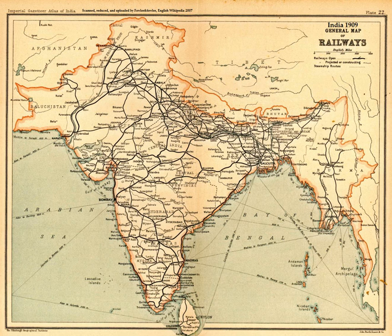Maritime trade was carried out extensively between South India and Southeast and West Asia from early times until around the 14th century AD. Both the Malabar and Coromandel coasts were important trading centers from as early as the 1st century BC, used for import and export as well as transit points between the Mediterranean region and Southeast Asia. Over time, traders organized themselves into associations which received state patronage. Historians Tapan Raychaudhuri and Irfan Habib claim this state patronage for overseas trade came to an end by the 13th century AD, when it was largely taken over by the local Parsi, Jewish, Syrian Christian and Muslim communities.